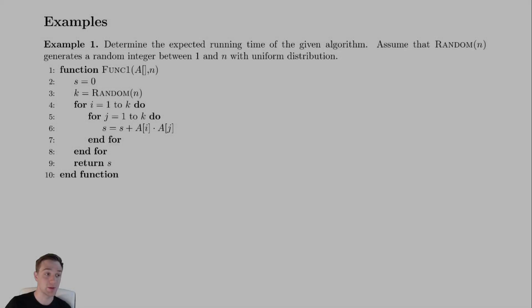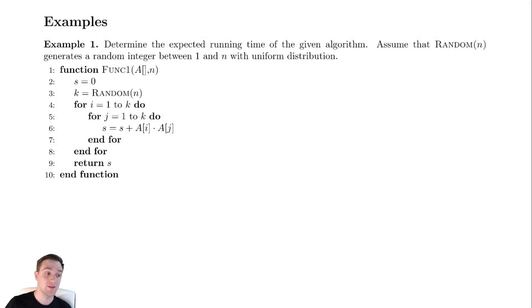For our first generic example, we're going to have some relatively nice-looking function that has some randomness in the form of a random call appearing. The problem says determine the expected running time of the algorithm, and we're going to assume that that random function generates a random integer between 1 and n with uniform distribution. This will allow us to say that the probability it takes any particular value between 1 and n is going to be the same for every single value. This will make our analysis much easier.